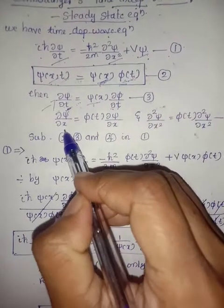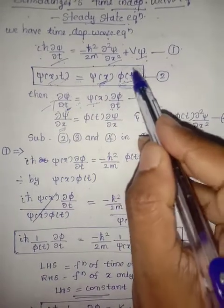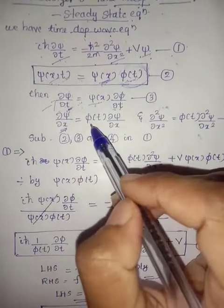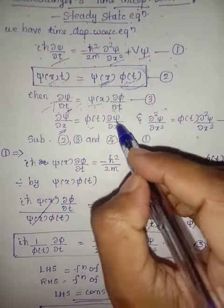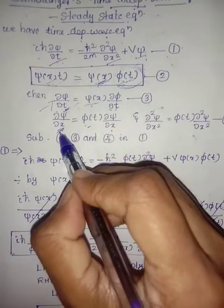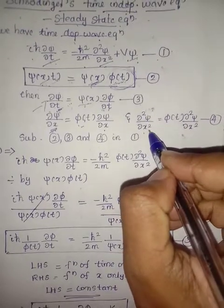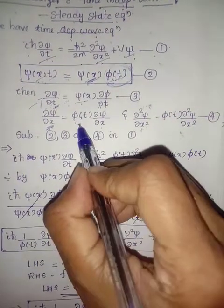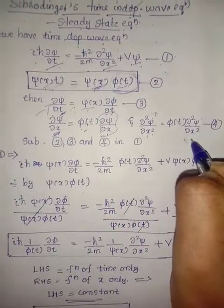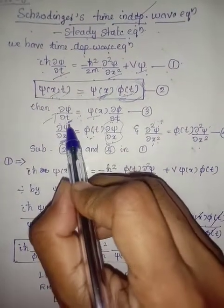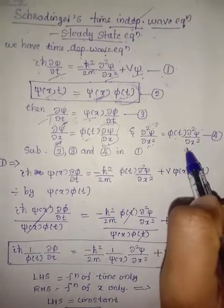Similarly, for ∂ψ/∂x with respect to position, φ(t) becomes the constant term. So ∂ψ/∂x = φ(t) · ∂ψ/∂x. Differentiating again, ∂²ψ/∂x² = φ(t) · ∂²ψ/∂x², since φ(t) remains constant. We now have substitutions for ∂ψ/∂t = ψ(x)·∂φ/∂t and ∂²ψ/∂x² = φ(t)·∂²ψ/∂x².